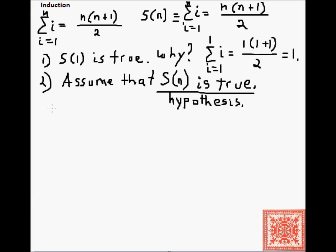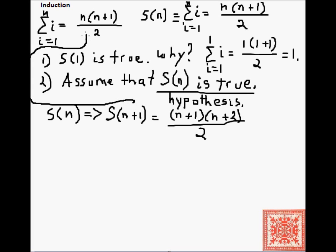We assume that S of n is true, and then we will use it to derive S of n plus 1. So if S of n, then S of n plus 1. The trick in many of these problems is to use S of n somehow in the derivation of S of n plus 1, and to rewrite S of n plus 1 in terms of S of n. What is S of n plus 1? It's n plus 1 times n plus 2 over 2. There's no magic here. We just plugged n plus 1 over here instead of n. This is what we need to show.